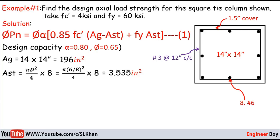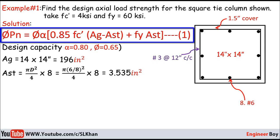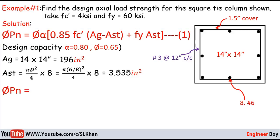fc' is known and fy is also known. Now we plug into equation 1, which is the formula: ΦPn = Φα[0.85 × fc' (Ag - Ast) + fy × Ast]. The design capacities are known. 0.85 × fc', that's 4 ksi.